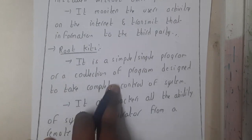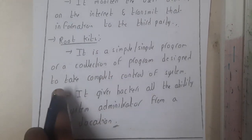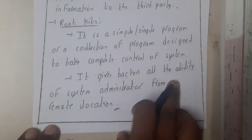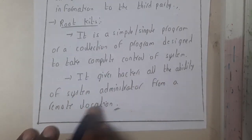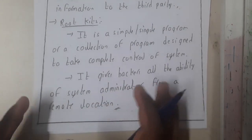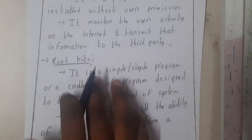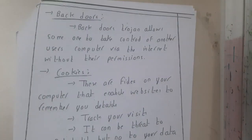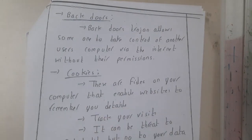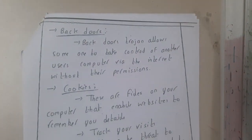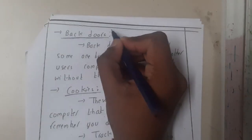A rootkit is a single program or collection of programs designed to take complete control of a system. It gives hackers all the abilities of a system administrator from a remote location. So someone could sit at home and operate your system using a rootkit — and it is illegal, done without your knowledge or permission.